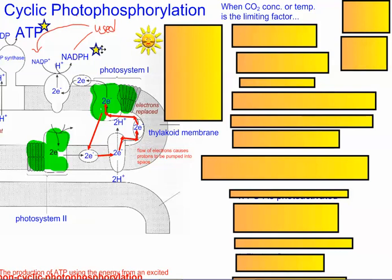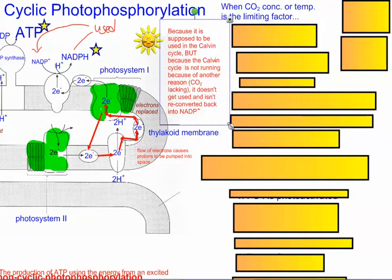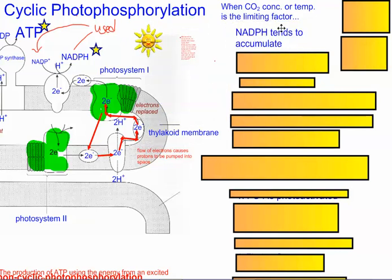It's actually called cyclic photophosphorylation. We're going to see that here. When carbon dioxide concentration or temperature is a limiting factor, I just said the Calvin cycle is not going to work, then NADPH, this guy over here, is going to accumulate.